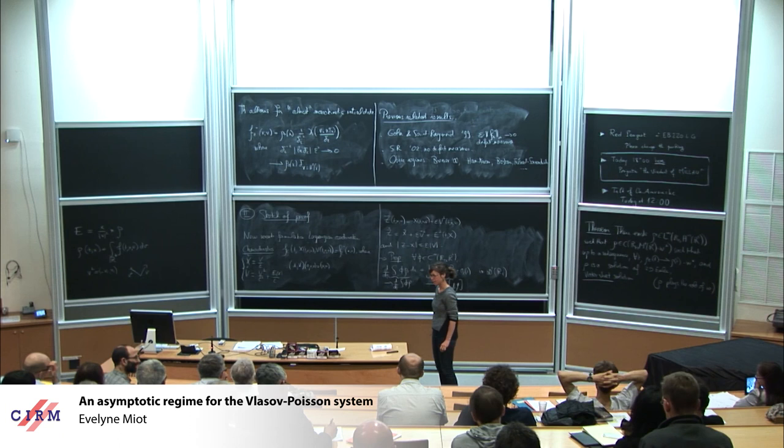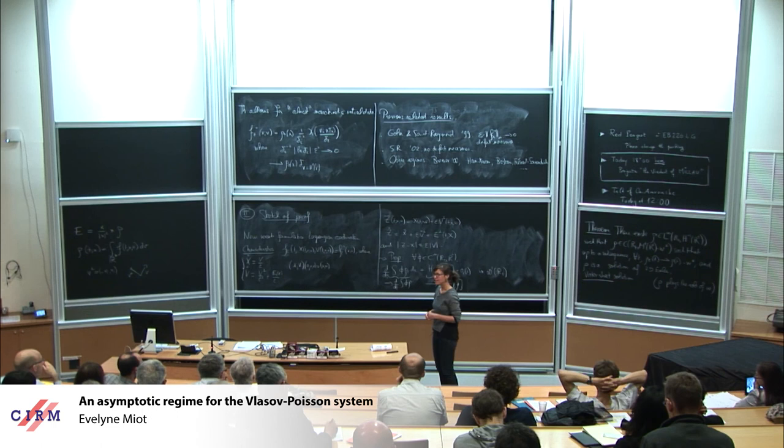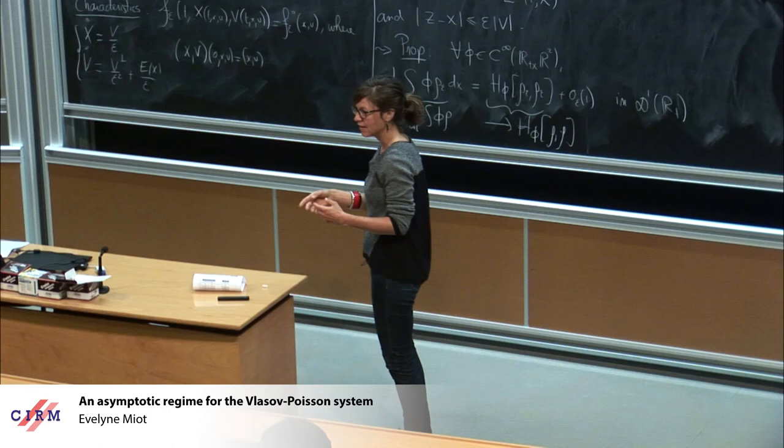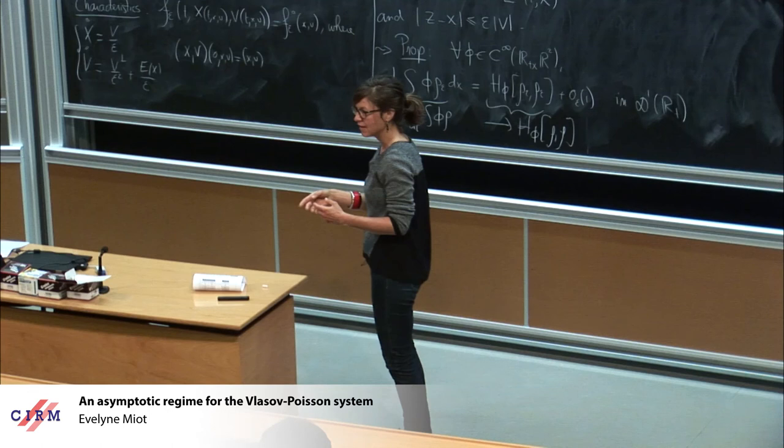Other questions? And yes, in the result by Brenier, he doesn't show that rho epsilon converges to omega, a solution to Euler. He shows that the moment, yeah, he works on the velocity. So it's not the same quantity converging to, playing the role of the vorticity. Okay. Thank you.